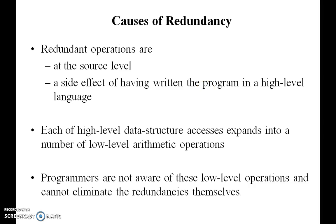What are the different causes of optimization? Mainly, the redundancy of data. Programmers may write code and at that time they may have repeated redundancy of data or functions in many places. Redundant operations are at the source program, causing side effects while writing the program in a high-level language. Sometimes we may expand the programs into a number of low-level arithmetic operations. Sometimes the programmer may not be aware of this, so they may introduce redundancy of data.